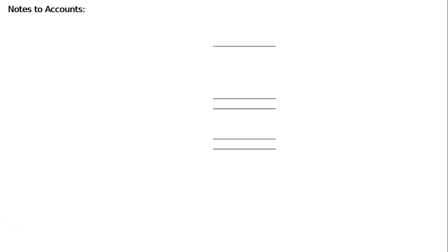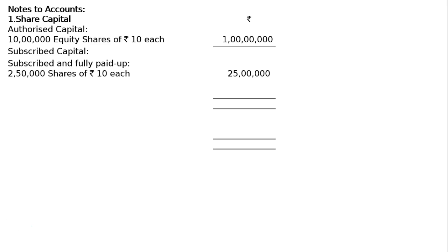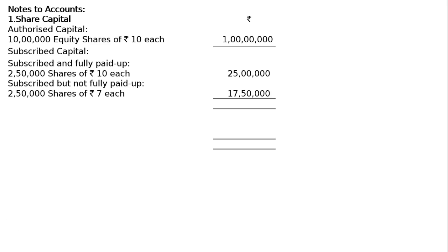Now come down to notes to accounts. Note 1 — share capital. Authorized capital: 1 crore divided into 10 lakh equity shares of rupees 10 each, that is 10 lakh into 10, which is 1 crore — that is the authorized capital. Next, subscribed and fully paid up: 2 lakh 50,000 shares of rupees 7 each, that is rupees 17 lakh 50,000. This total amounts to rupees 42 lakh 50,000.